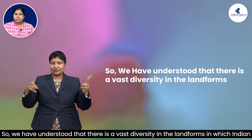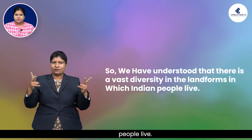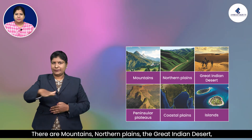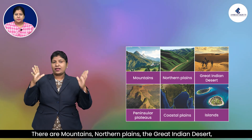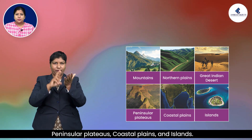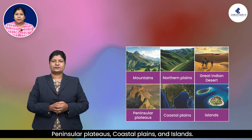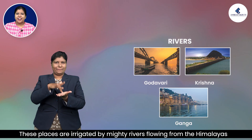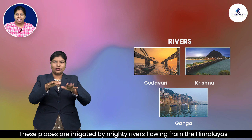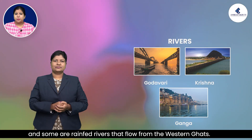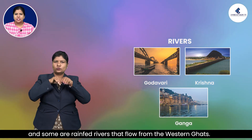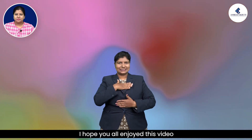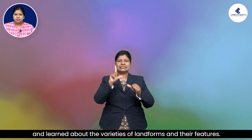There is a vast diversity in the landforms in which Indian people live. There are mountains, northern plains, the great Indian desert, peninsular plateaus, coastal plains, and islands. These places are irrigated by mighty rivers flowing from the Himalayas, and some are rain-fed rivers that flow from the Western Ghats. I hope you all enjoyed this video and learned about the varieties of landforms and their features.